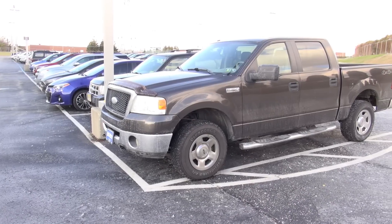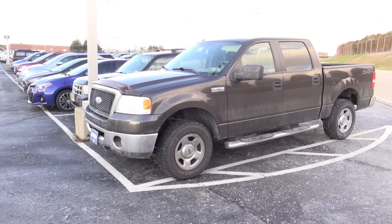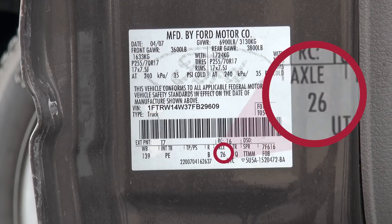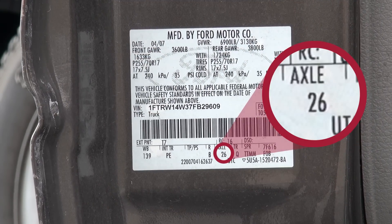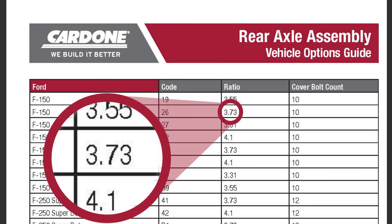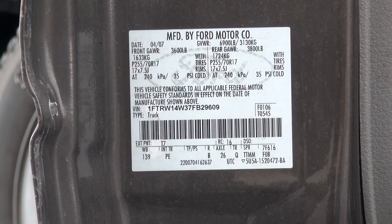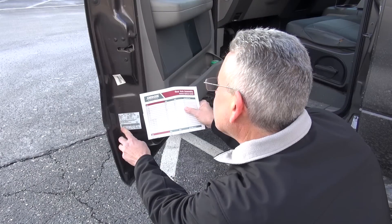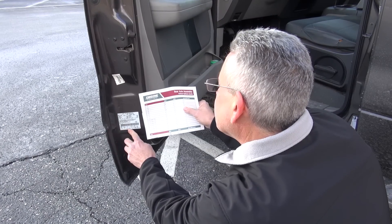In this case, we're looking for the correct drive axle assembly for a 2007 Ford F-150. The vehicle option code label is located here on the door jamb. The code for this truck is 26, which tells us we need to use a drive axle assembly with a 3.73 gear ratio.